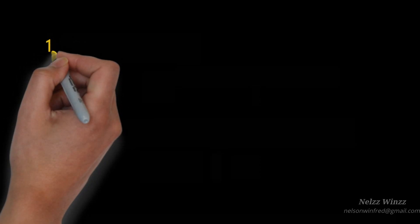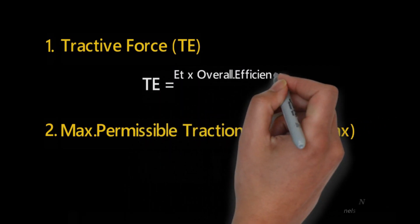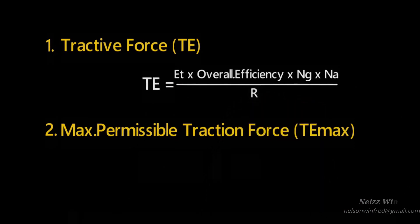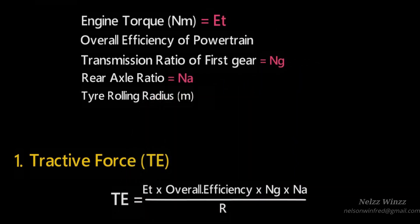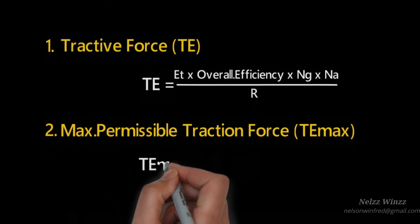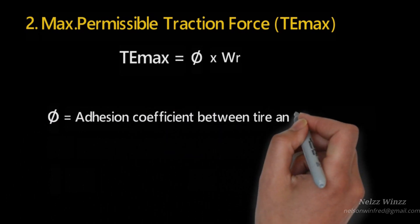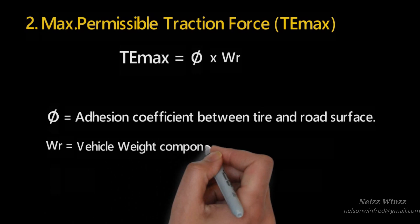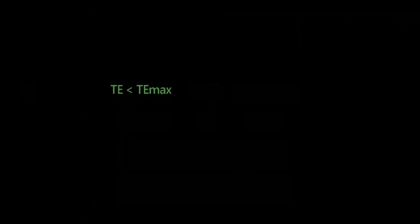We have to find out two values: tractive force (TE) and maximum permissible traction force (TE max). The formula for tractive force is: Et multiplied by overall efficiency, multiplied by Ng and Na, divided by R — where Et is engine torque, Ng is the first gear transmission ratio, Na is the rear axle ratio, and R is the tire rolling radius. The second formula is: Psi multiplied by WR, where Psi is the adhesion coefficient between tire and road surface, and WR is the vehicle weight component on the driving wheel. We compare these two values: if TE is lower than TE max, slip won't happen and the design is safe. If TE is greater than TE max, the vehicle will slip and will not move.